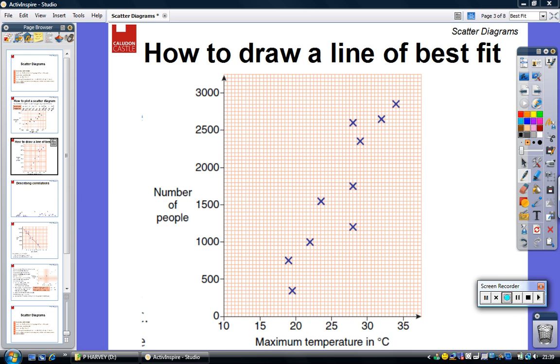We're now going to have a look at how to draw a line of best fit for a scatter diagram. The line of best fit is a straight line that passes through, or is close to, the plotted points on the scatter diagram.